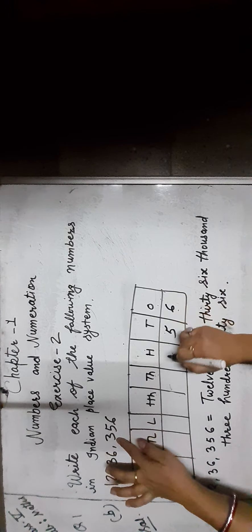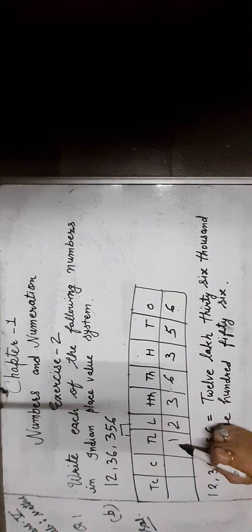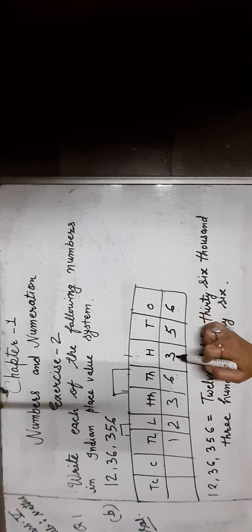The next number is 12,36,356. Place the digits: 6 ones, 5 tens, 3 hundreds, 6 thousands, 3 ten-thousands, 2 lakhs, and 1 ten-lakh. Since 1 and 2 are in the lakh place we call it 12 lakh, and 3 and 6 are in the thousands place so 36 thousand. The number reads: twelve lakh thirty-six thousand three hundred fifty-six.